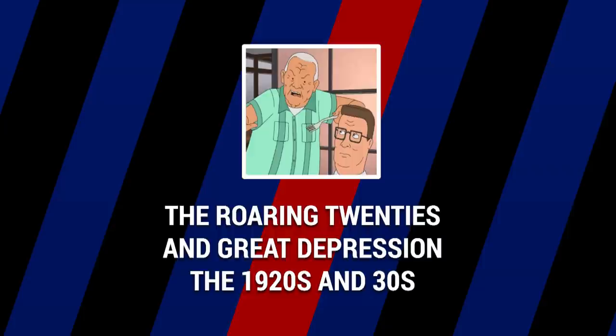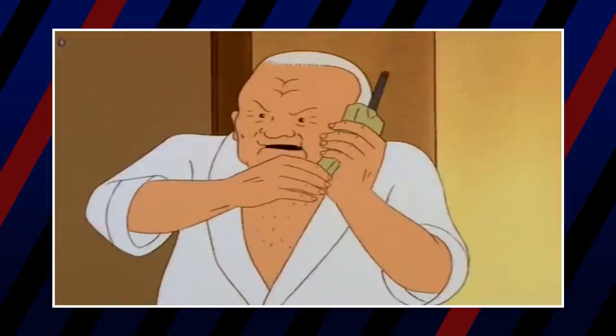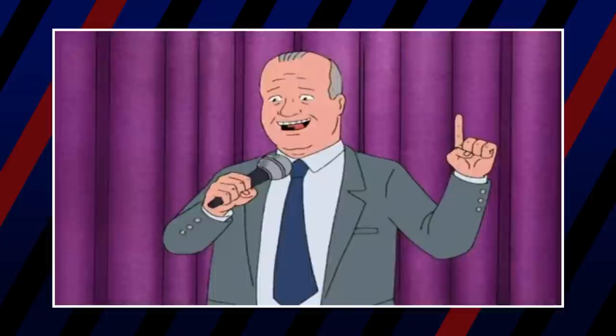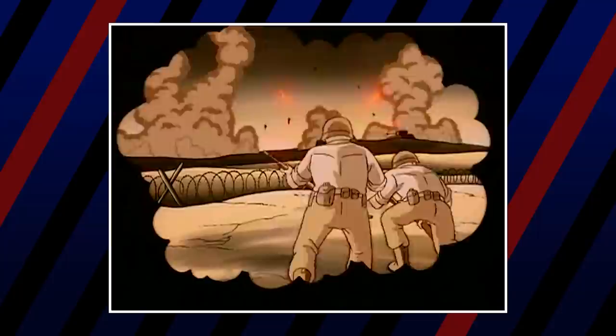The 1920s and 30s. Although not much of importance happens during this time, Cotton Hill is born in 1927, his ex-wife Tilly Garrison in 1929, and then Buck Strickland in 1931. Besides that, World War II wasn't too far away and would actually play a key role in the Hill lineage.